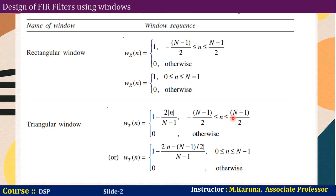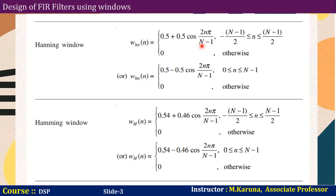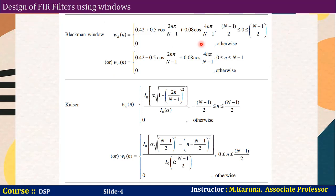Let us see the different types of windows. Rectangular window — this is the equation for rectangular window. Next is the triangular window formula. Next, Hanning window formula — here there are two equations, you can use any one of them. Next, this is the equation for Hamming window. Next, Blackman window. And Kaiser window.